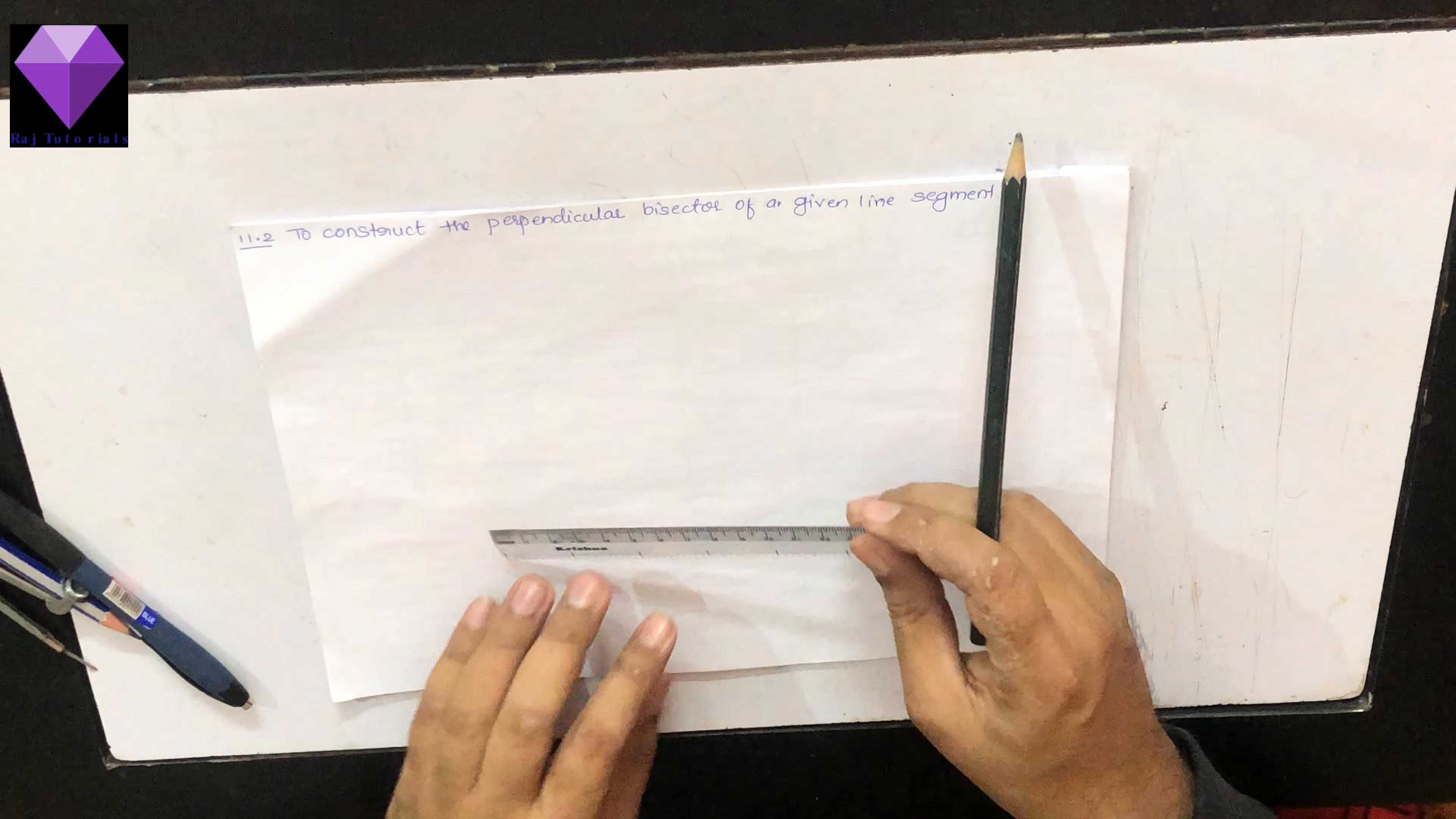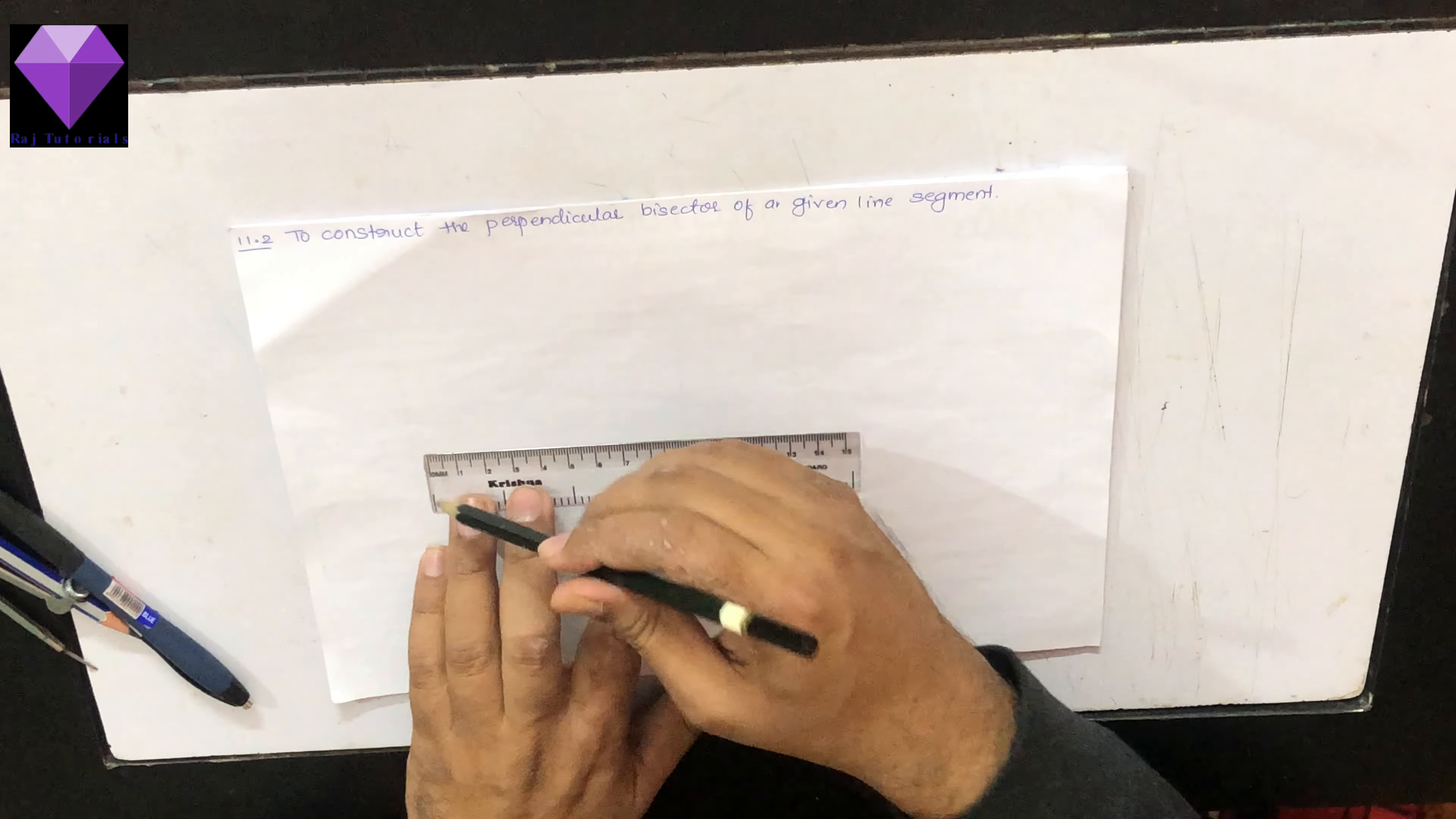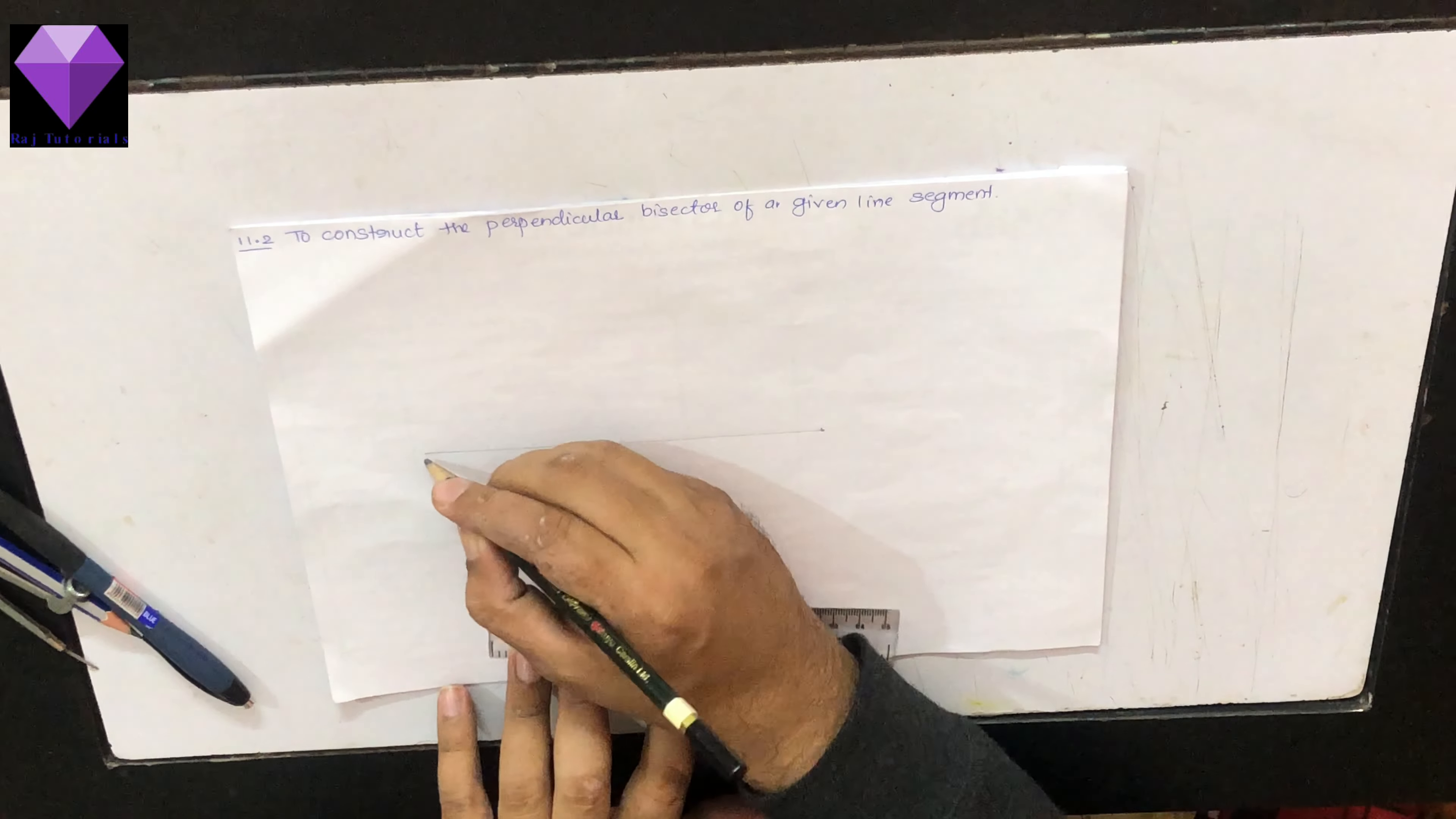First of all, I am making a line segment of any measurement. I don't know the measurement of the line segment. What is the measurement of line segment AB?